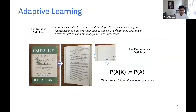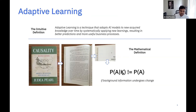The intuitive definition of adaptive learning is: a technique that adapts AI models to newly acquired knowledge by systematically applying those new learnings, which results in better predictions and more useful business processes. The mathematical definition comes from causality — on the second page of one of my favorite books on causality, it discusses how conditional probability is dependent on background information. The probability of an article being positive is dependent on the context. Here, K is the context or background that we usually ignore, and we consider it consistent, saying probability of A given K equals probability of A. That's where the gist of adaptive machine learning comes in: if your context is financial crimes or ESG analysis, you have a different background knowledge K, and that's why your probabilities and your models are going to be different.